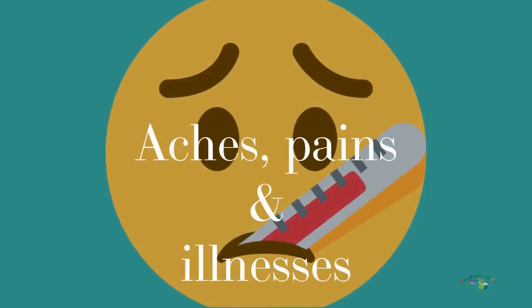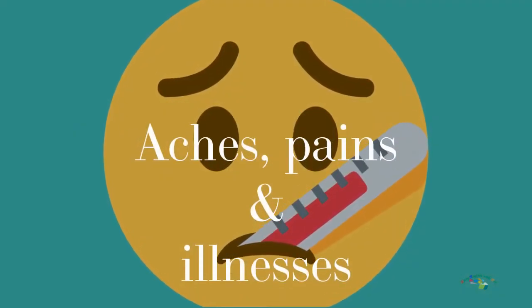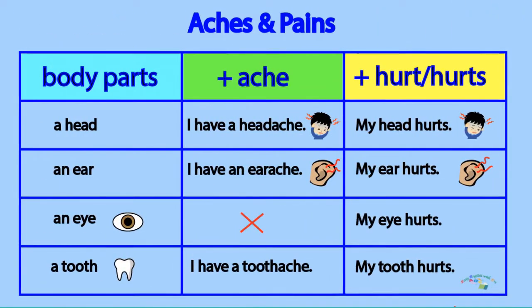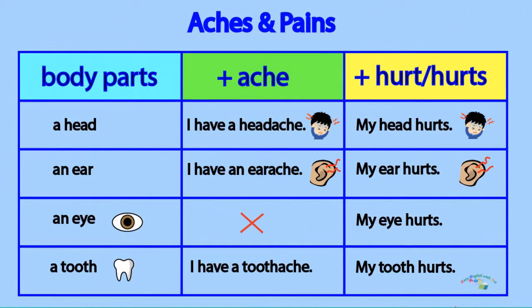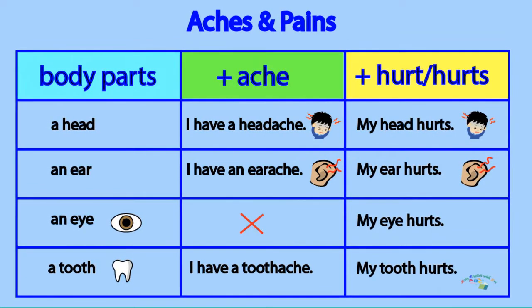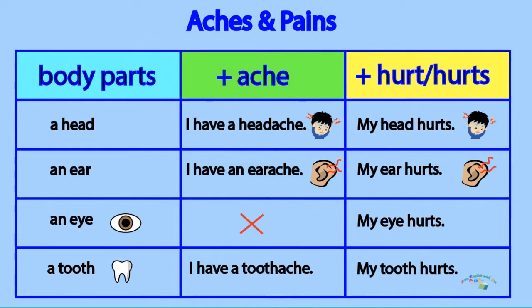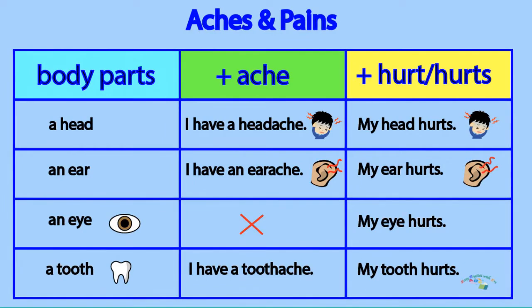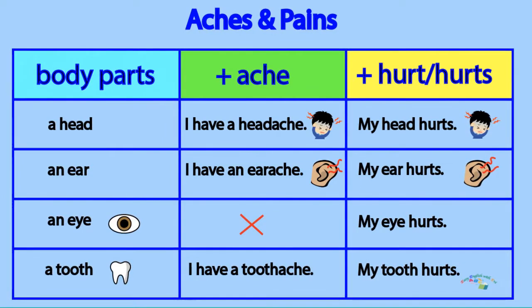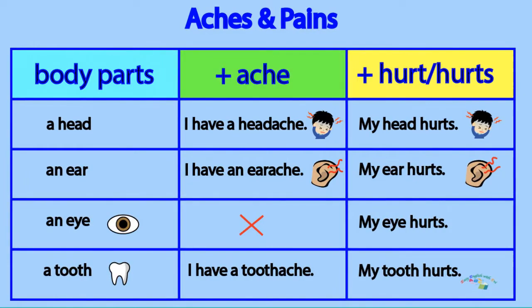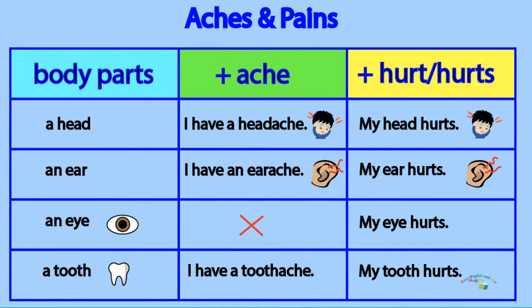Aches, pains, and illnesses. Aches and pain — body part plus ache, plus hurt or hurts. A head: I have a headache, my head hurts. An ear: I have an earache, my ear hurts. An eye: my eye hurts. A tooth: I have a toothache, my tooth hurts.